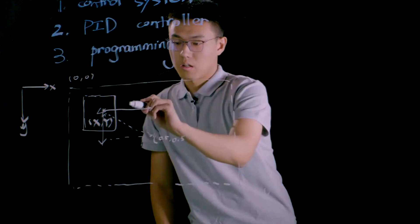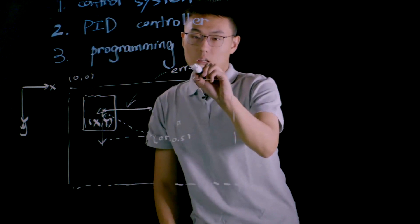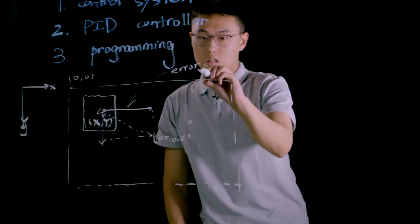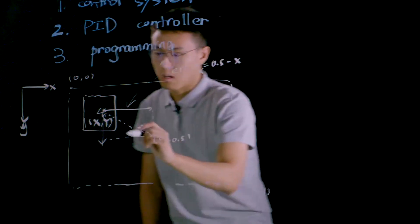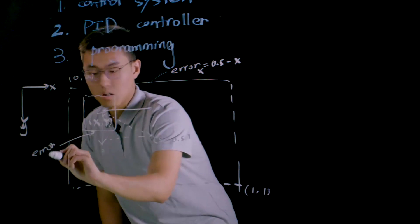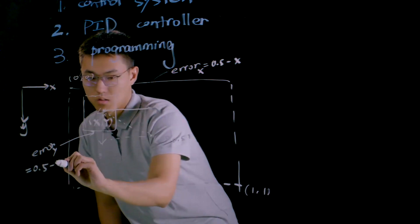Therefore, for the error in x direction equals to 0.5 minus x, and the error in y direction equals to 0.5 minus y. Like I mentioned before, we use PID controller to eliminate the errors over here.